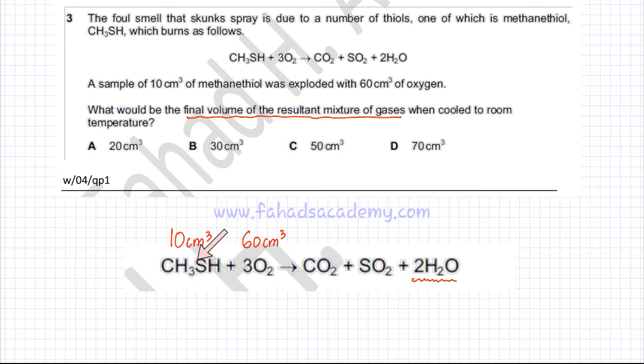According to the equation, one thiol reacts with 3 O₂, so it's 1:3 ratio. So if you have 10 cm³, then 10 cm³ is not going to react with 60 cm³. It's only going to react with 30. So when 10 cm³ reacts, it reacts with 30 cm³, and there would be 30 cm³ of oxygen left unreacted because it's in excess.